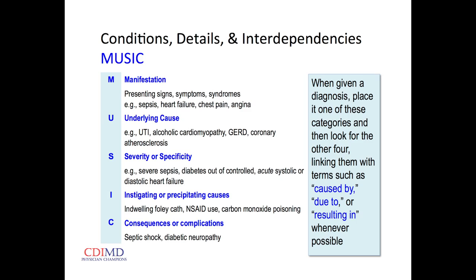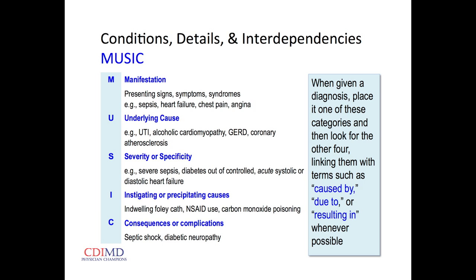This is a mnemonic my partner created — we're from Nashville, it's music, easy to remember. M stands for manifestations: the presenting signs, symptoms, and syndromes. U is the underlying cause. S causes us to pause and consider the severity and specificity. I is the instigating or precipitating factor. C is consequences or complications. When we identify a condition, we plug it in and ponder these other elements — if we can link condition and cause, or condition and consequence, that most of the time increases the relative weight.